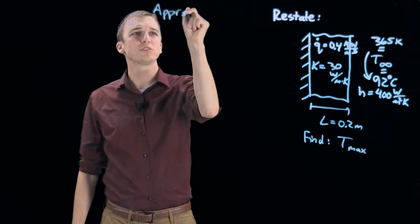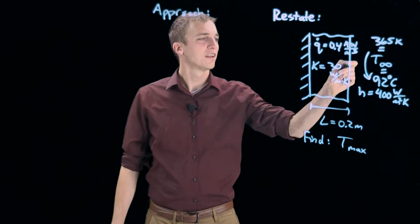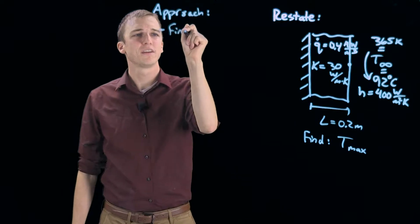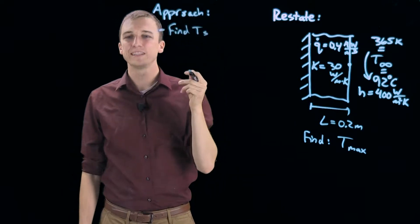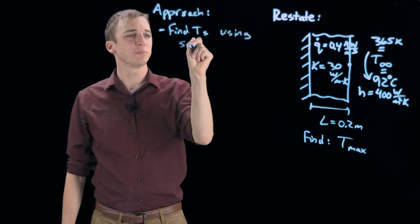The approach we are going to take is we are going to find first what is the surface temperature, so find what we will call Ts, the surface temperature. And we are going to do that using a surface balance.